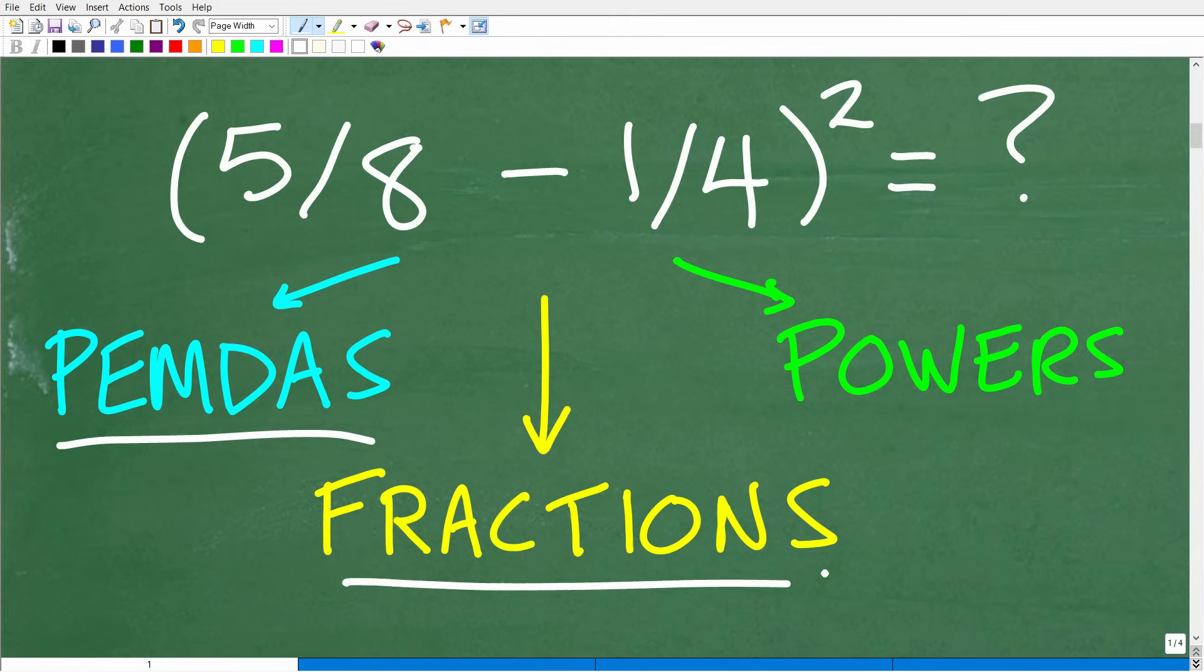The order of operations in mathematics is basically the correct order when we see different operations. So here we have subtraction, parentheses, we have powers. We need to understand the correct order to do this problem. And of course, I'm going to get into this in just one second. But this is the first skill that we need to understand, the order of operations. Clearly, we're going to have to deal with fractions, because we're going to have to subtract some fractions. And then we're going to have to understand how to find powers, because we're going to be squaring something up here. So these are the three basic skills that we're going to have to employ to get this correct.